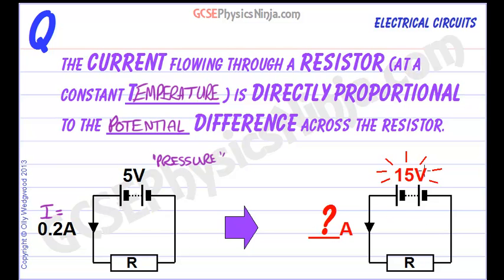So what would happen if we had a potential difference of 15 volts in our battery pushing charge through the resistor? How much current would we have here compared to our first case?